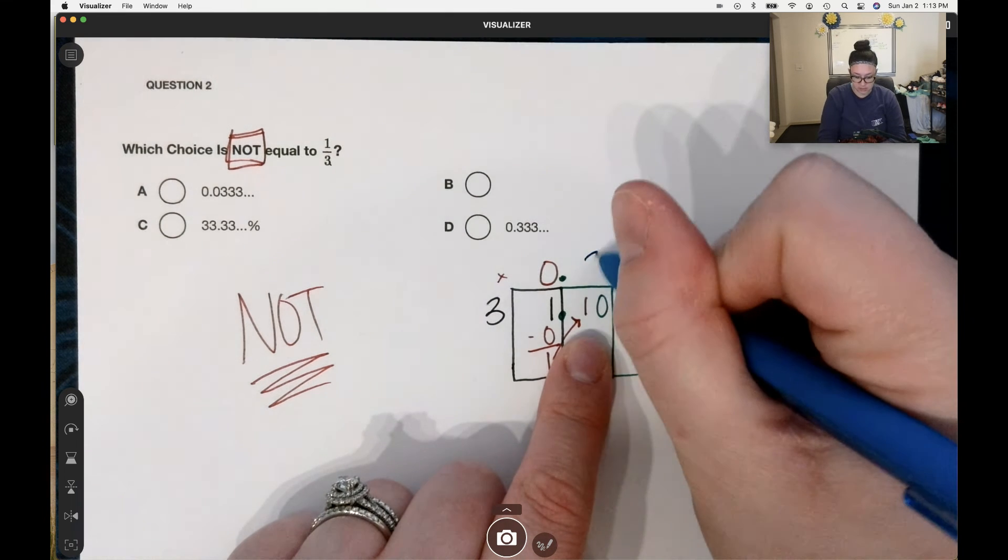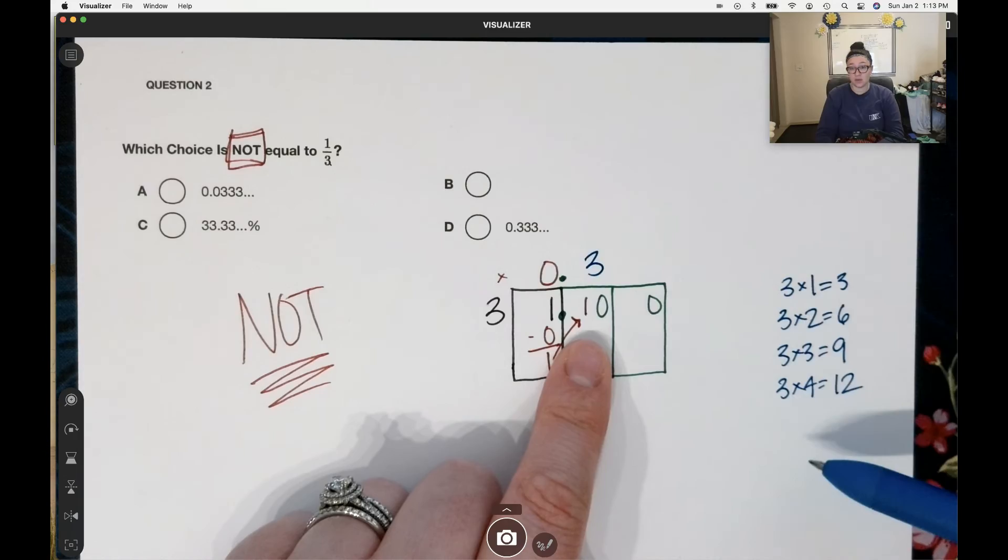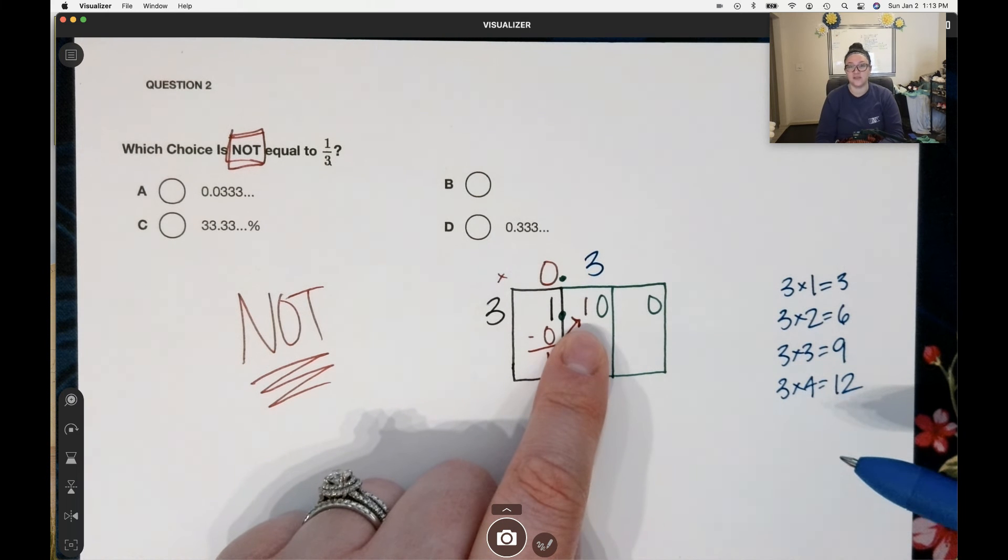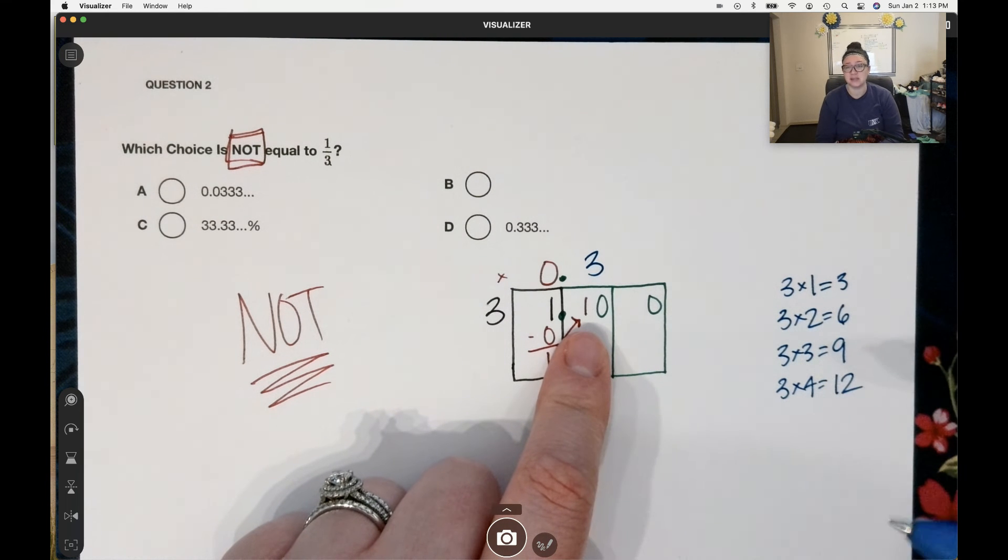Twelve is too big. I'm just trying to go into ten. So I need to do three times three. Write out your multiples on the side. Keep going until, oh, I found my answer. This will help so much with your division. Please, please, please do that.